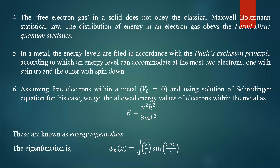The energy of the electron is given by E = n²h² / 8mL². The first state is obtained by n = 1, n = 2 gives the second state, n = 3 the third, and so on. In the first state, two electrons are allowed — one with spin up and one with spin down. In the second state, again two more electrons, and in the third state two more, and that is how electrons are distributed in the metal.